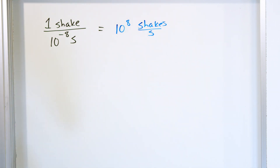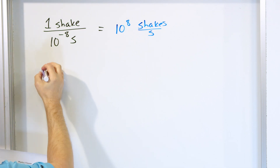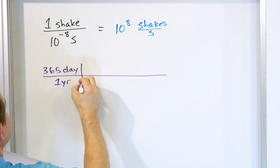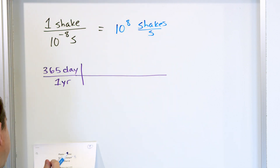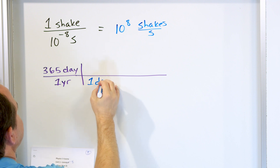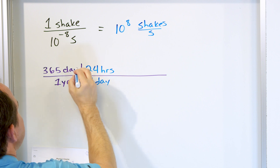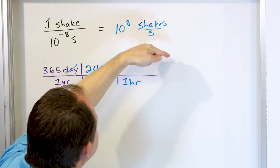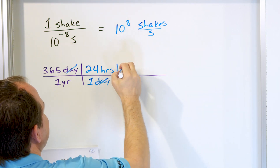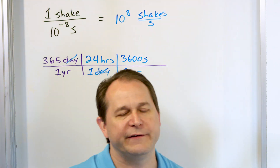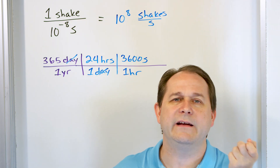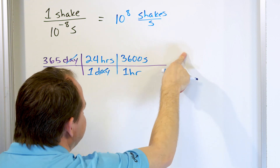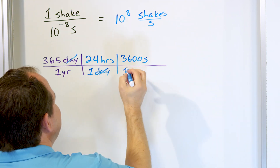Now we need the number of seconds per year. We know there are 365 days in one year. We want to convert to seconds, so in one day we have 24 hours — the days cancel. Now in one hour, how many seconds are there? I could go one hour to 60 minutes and then one minute to 60 seconds, but I just remember there are 3,600 seconds in an hour. The reason is 60 minutes times 60 seconds equals 3,600. The hours cancel.